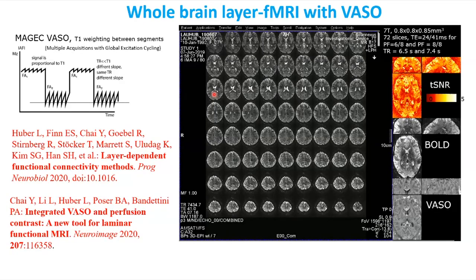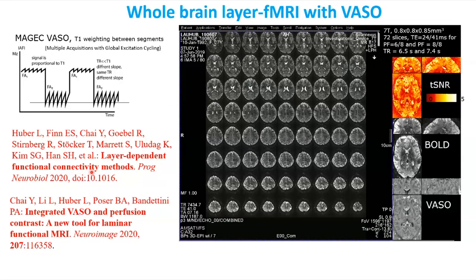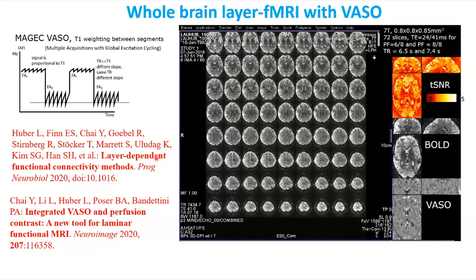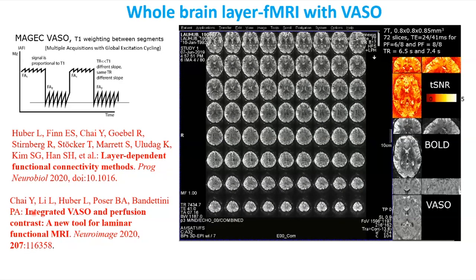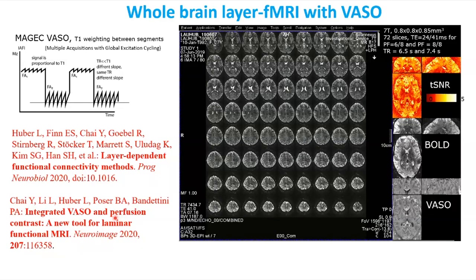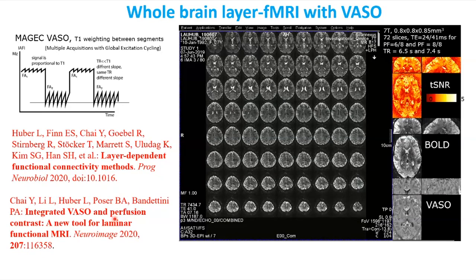Whole-brain imaging gets more difficult. With VASO you have to wait for the inverted signal to reach the null point — it has very inefficient time efficiency with a long TR, but you can shorten it with some sacrifice in contrast. Hui Chai developed a technique called VAPER that combines perfusion with a DANTE pulse sensitive to blood volume and perfusion, and it's more time-efficient than VASO.